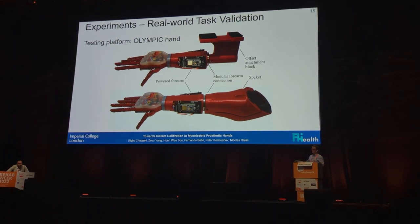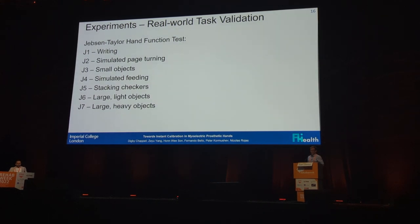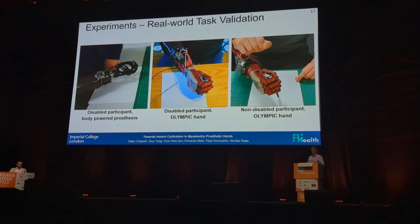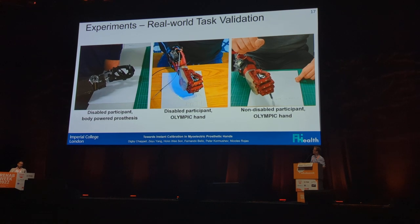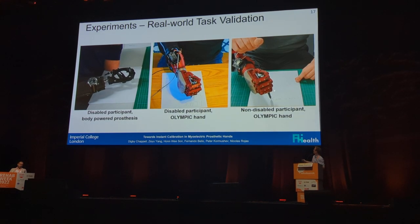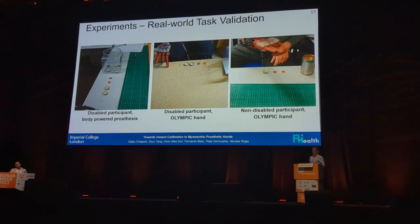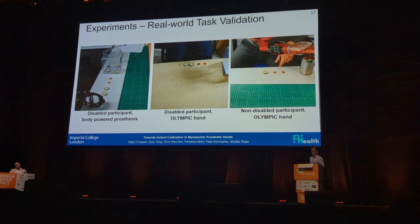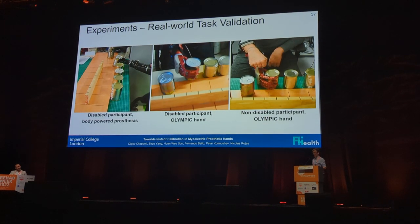So we used the Olympic hand — built by us in the lab — and tested it on the Jepson-Taylor hand function test, which has a bunch of ADL-like tasks. We got the disabled participant to use their body power prosthesis and also the Olympic hand, and had 10 non-disabled participants using the Olympic hand. Tasks included picking up small objects — two paper clips, two bottle caps, and two pennies — and lifting large, heavy objects.